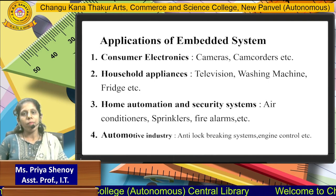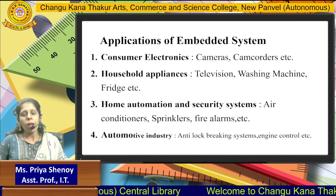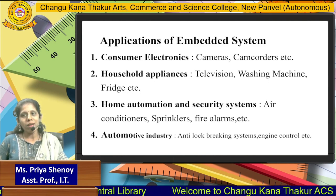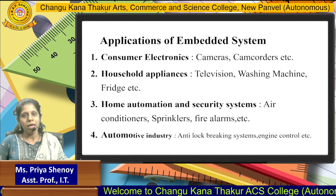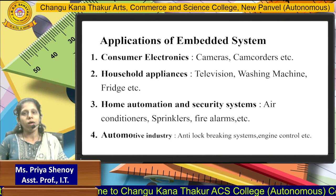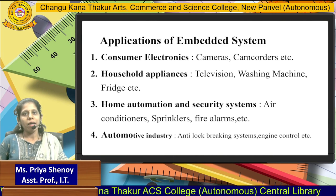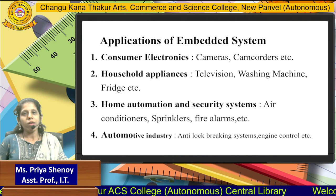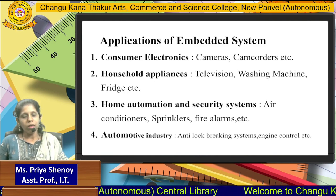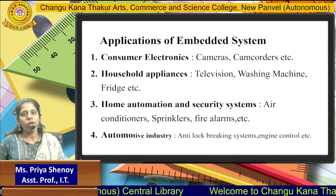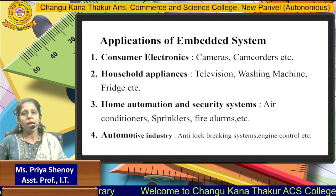Operating system may or may not be present in an embedded system. An embedded system is designed to perform a specific task only, whereas a general purpose computer system can perform variety of different functions based on the user requirement. In this video, we will discuss what are the different applications of an embedded system.